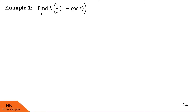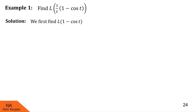In this example, we are asked to find Laplace of (1/t)(1 - cos t). This function is of the form (1/t) f(t), so here f(t) is 1 - cos t. We will first find the Laplace transform of 1 - cos t. Using the linearity property, we can write this as Laplace of 1 minus Laplace of cos t.